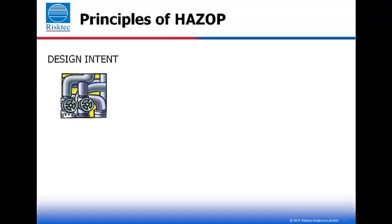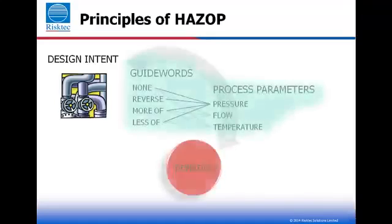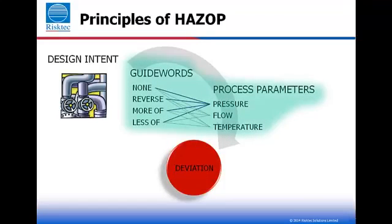The main thought processes that need to be established are: What is the intention of the node? What do we expect to happen in this particular piece of equipment, or at this stage in the operation? What possible deviations from design intent may occur? What can go wrong? We do this by taking a series of guide words, applying them to parameters, to produce the deviations, such as no flow, high pressure, low temperature.